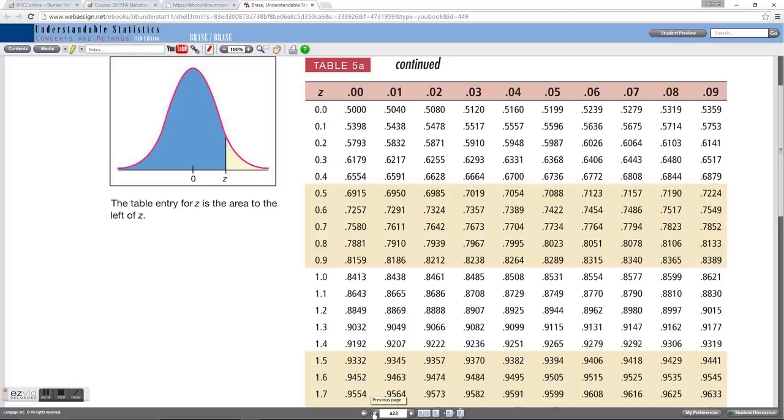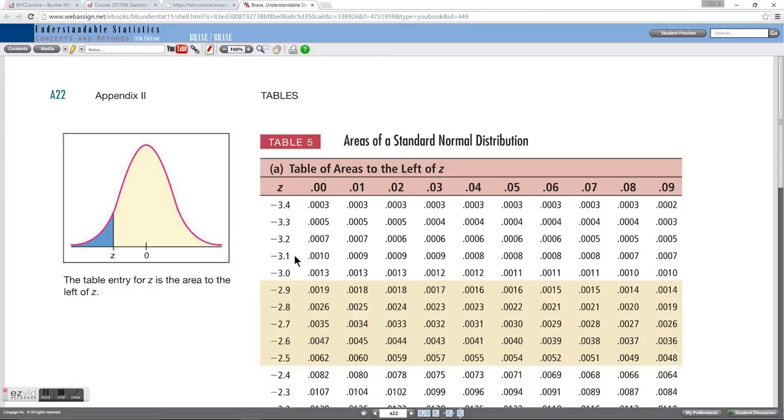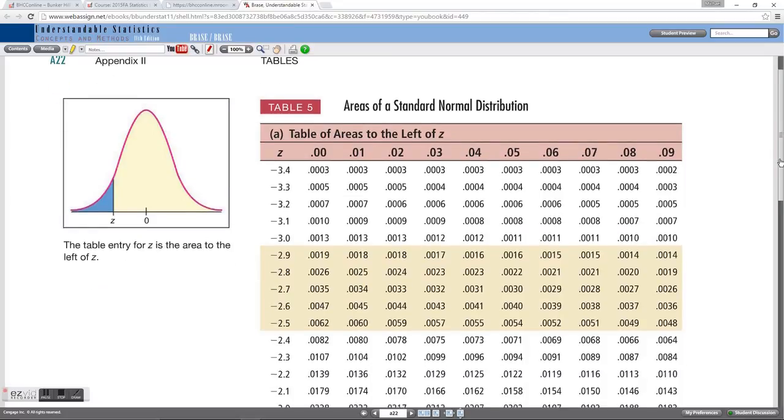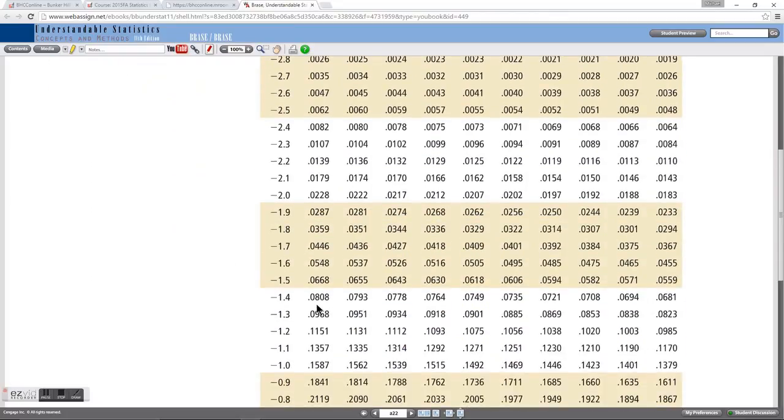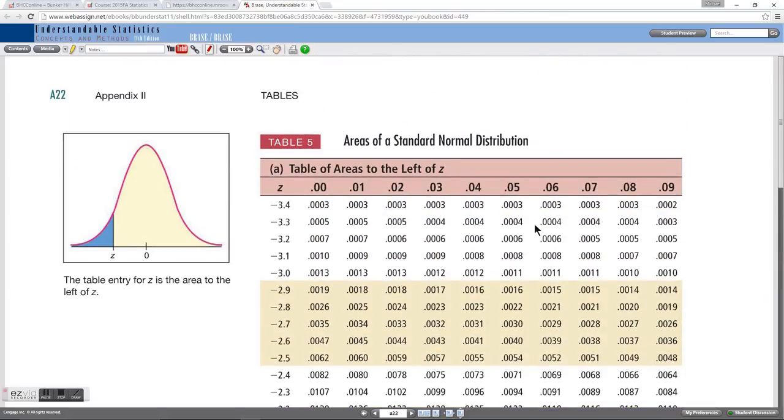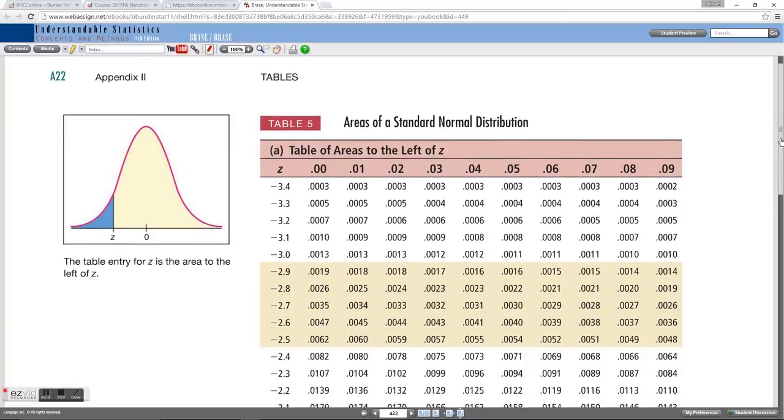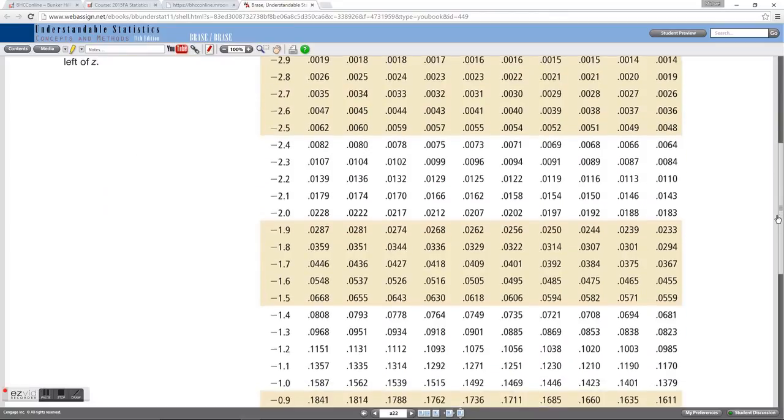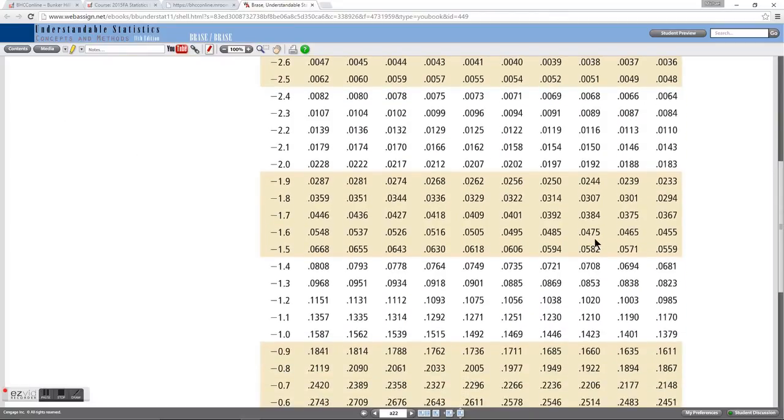So going to my normal table, going to the negative z page, I'm going to look up negative 1.2 in the left column, and I'm going to look up a hundredth digit of 5, 0.05. Matching up that row and column gives me a probability of 0.1056.